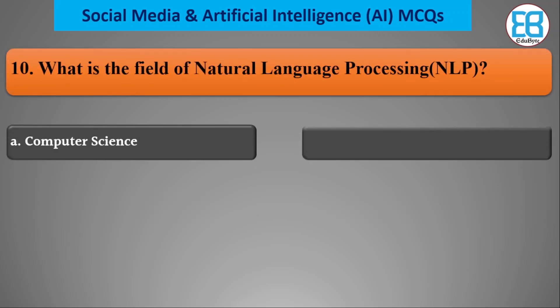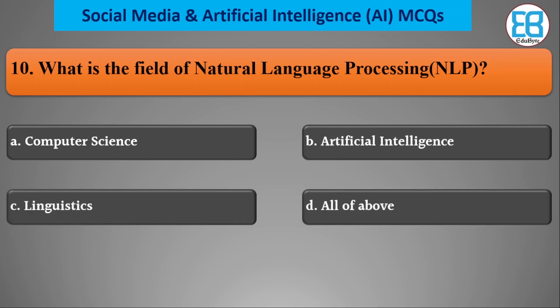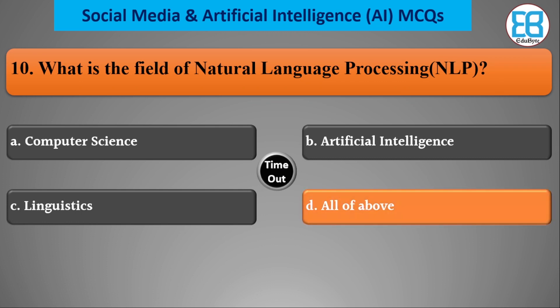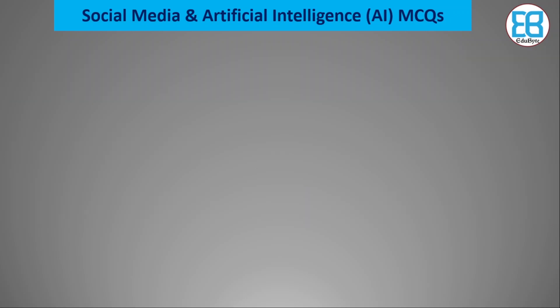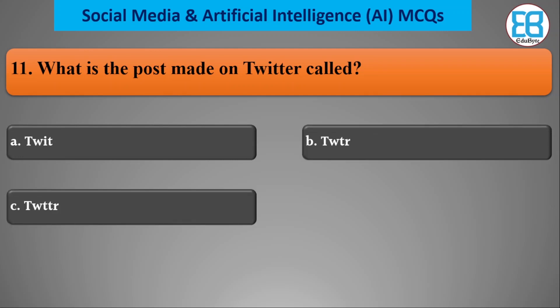What is the field of natural language processing? NLP is a bigger field that includes computer science, artificial intelligence, and linguistics. The correct option is all of the above.